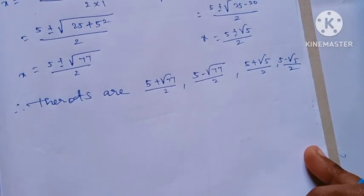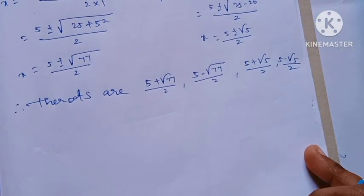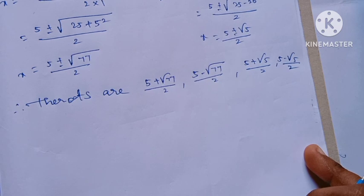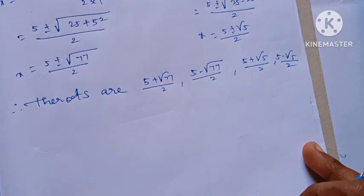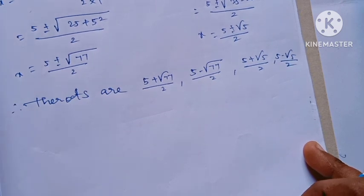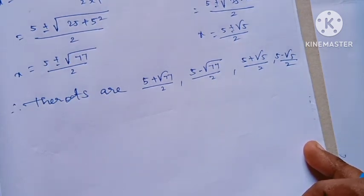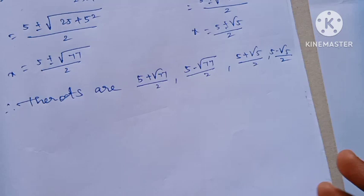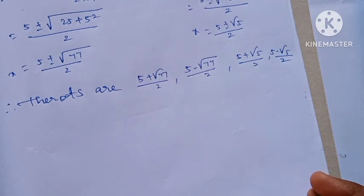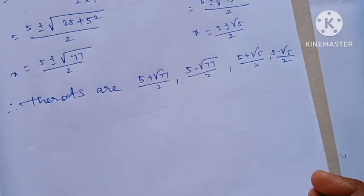So 4x solutions are now the final answers. x = (5 ± √5) / 2. That is the question. Thank you.